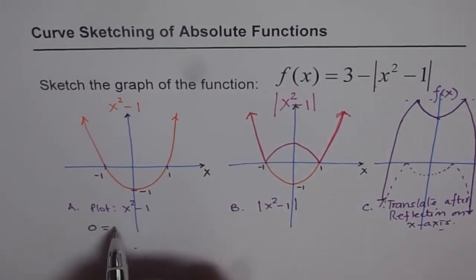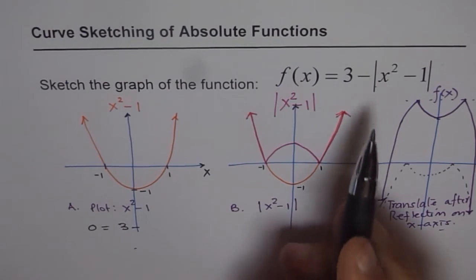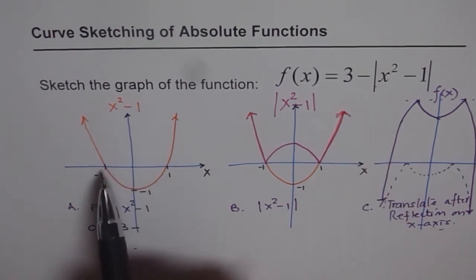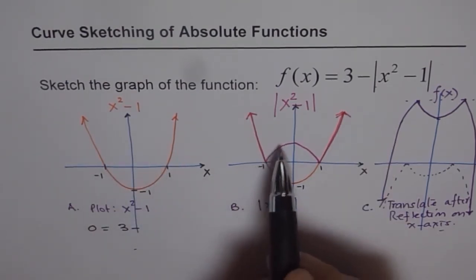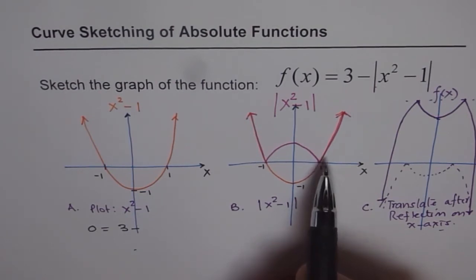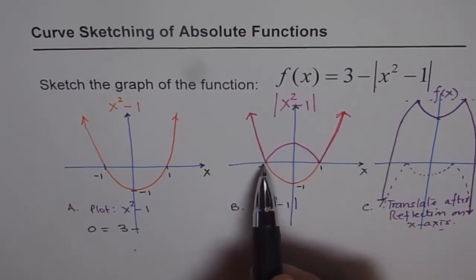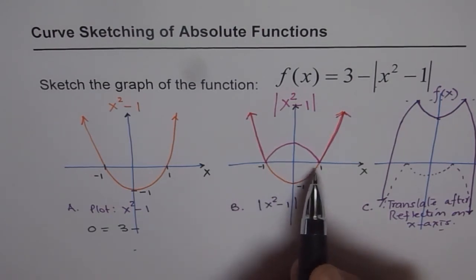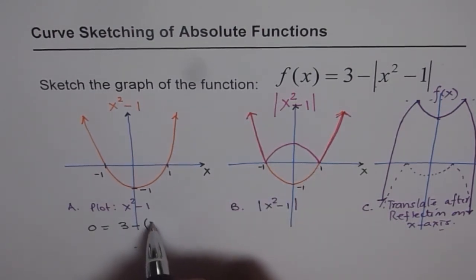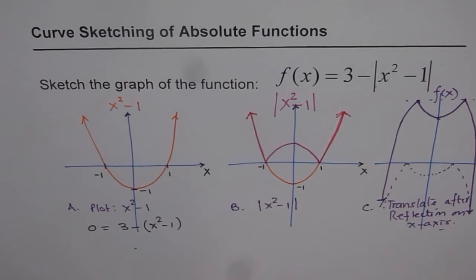We get 0 equals to 3 minus x squared minus 1 absolute. So x squared minus 1 absolute, as you can see, is x squared minus 1 if you are going beyond plus and minus 1. So we should say we can use here the value x squared minus 1 itself.